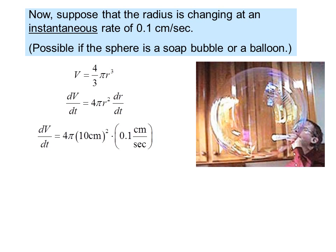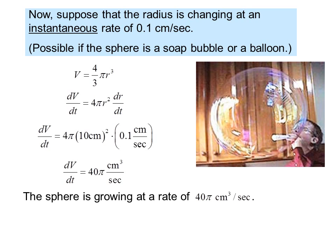dV/dt equals 4 pi times 10 centimeters squared times 0.1 centimeters per second. We use 10 centimeters as the radius and 0.1 as the rate of change of the radius. So we get dV/dt equals 40 pi cubic centimeters per second. The sphere is growing at a rate of 40 pi cubic centimeters per second.